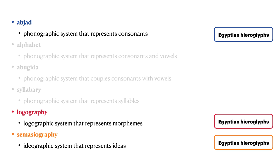Some Egyptian hieroglyphs represent one consonant, some represent two consonants, some represent three consonants. These form an abjad, a writing system that represents only consonants. Other Egyptian hieroglyphs have a logographic meaning, in that they represent morphemes. A few Egyptian hieroglyphs are sometimes used in an ideographic way, directly representing ideas.